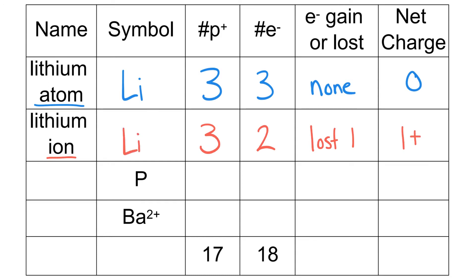For the next row, we know phosphorus and we know it's the atom because there's not a charge, there's not a little number and sign up at top. So we know phosphorus, looking at the periodic table, we can see again the amount of protons is 15.